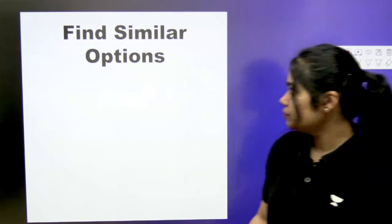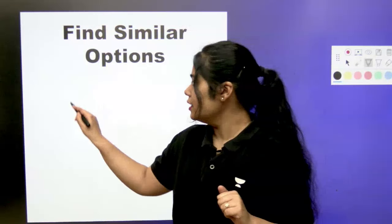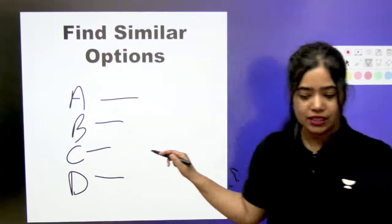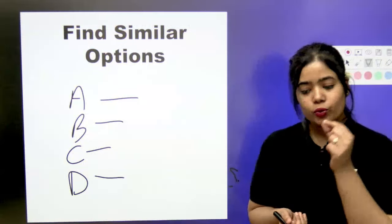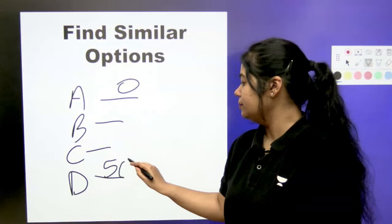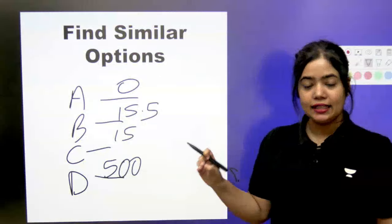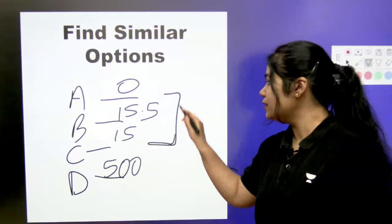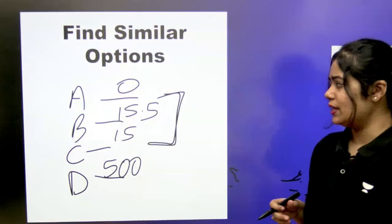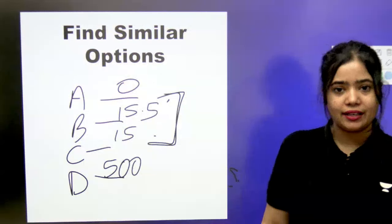Another hack is to find similar options. If we don't know the answer, look at the four options — the ones that are similar to each other are more likely to contain the right answer. For example, if A says 0 and D says 500, but B says 15.5 and C says 15, chances are the right answer is either B or C. If you have to guess, guess between the similar options.